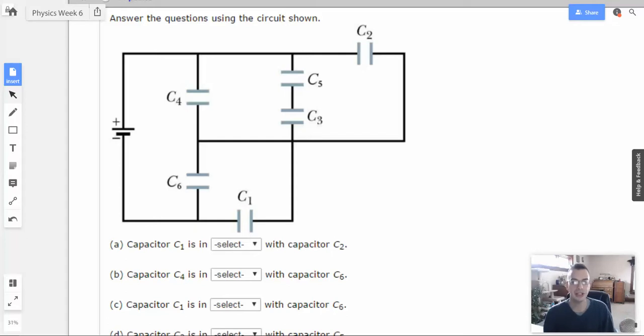The idea with series is the same current flows through every component. The easy example here would be C5 and C3. If something passes through one, it's going to have to pass through the other one. If you do a hydraulic analogy with pipes and water, any water that passes through C5 is going to have to pass through C3. It doesn't have anywhere else to go. Therefore, those would be in series.